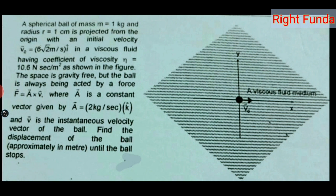A spherical ball of mass m = 1 kg and radius 1 cm is projected from the origin with an initial velocity v₀ = 6√2 m/s in the î direction, in a viscous fluid having coefficient of viscosity η = 10.6 N·s/m². The space is gravity free but the ball is always acted on by a force F⃗ = A⃗ × V⃗, where A⃗ is a constant vector given by A = 2 kg/s in the k̂ direction, and V⃗ is the instantaneous velocity vector of the ball.